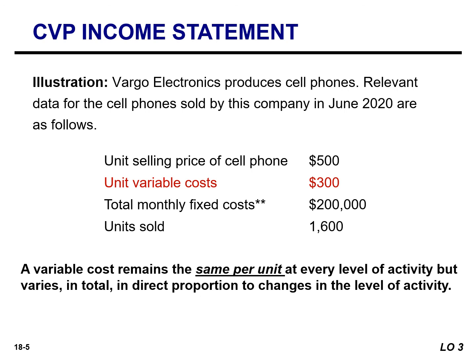Before we get to the CVP income statement, let's review how a cost behaves. That unit variable cost of $300 — when we defined a variable cost, we said it remains the same per unit at every level of activity, but it varies in total in direct proportion to changes in the level of activity. If our sales increase, our total variable costs will increase, but our unit variable costs will remain the same.